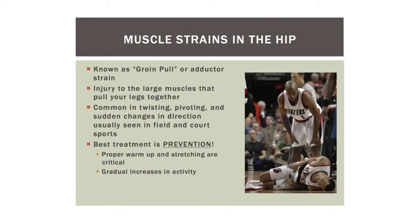One of the most common hip injuries is muscle strains — what we call a groin pull or adductor strain. The adductor muscles are a large group that pulls your legs together, and a strain is when the muscle is stretched or torn beyond its normal range. This is common in court and field athletes — basketball and other activities involving twisting and pivoting. Best treatment is always prevention through adequate warm-up and stretching. When strains do happen, there's often bruising, activity must be limited, and gradual progression is needed. This is typically not a surgical injury.